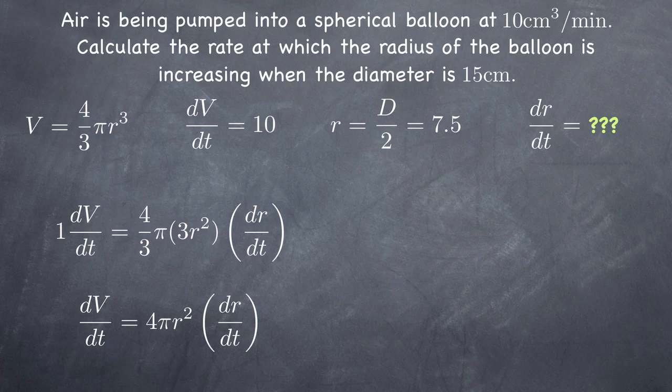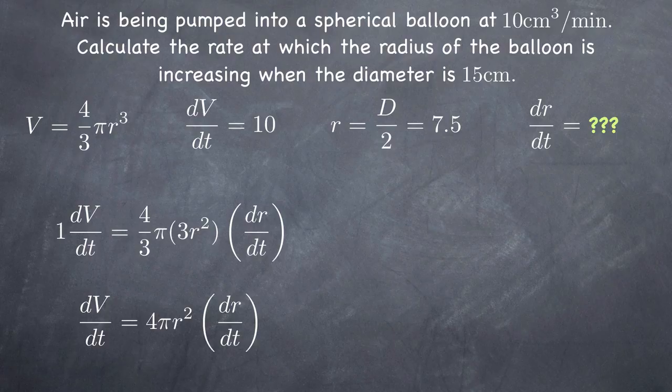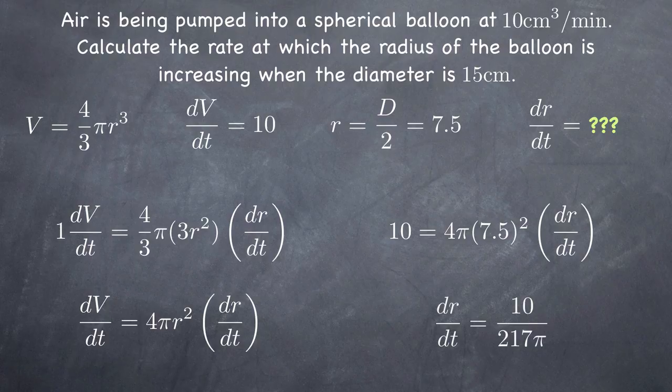Similarly, when you take the derivative of r cubed, you'll get 3r squared, but you also have to multiply by dr over dt. Once we've used implicit differentiation to calculate the derivative, we can plug in the values we wrote down before, leaving ourselves only with the value we needed to solve for, dr over dt. Getting dr dt alone on the left-hand side gives us our final answer for the rate of change of the radius of the balloon when the diameter is 15 centimeters as air is being pumped in at 10 cubic centimeters per minute.